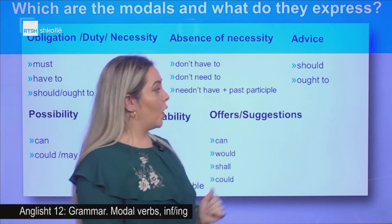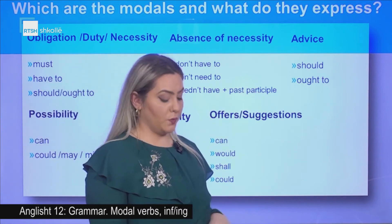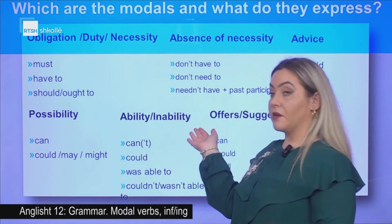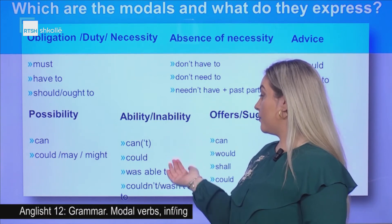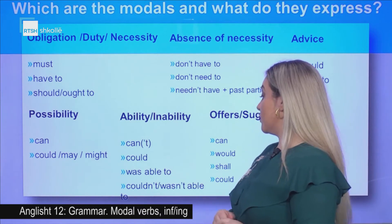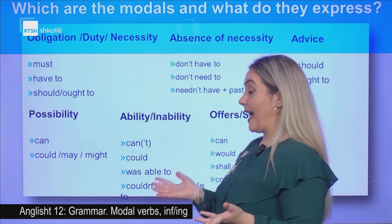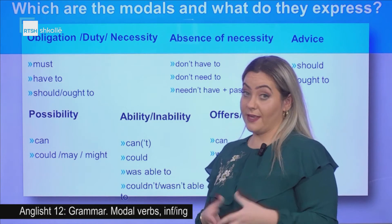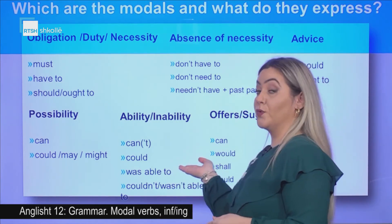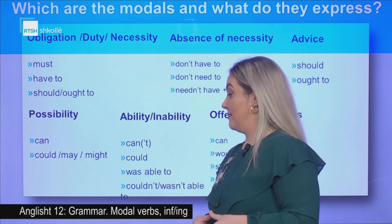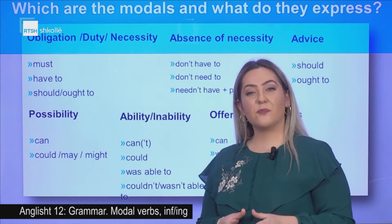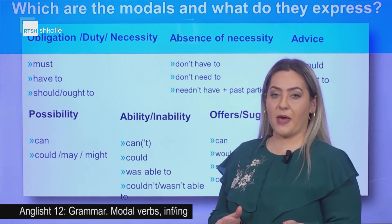Advice: should or ought to. Ability and inability: can or can't, could, was able to, couldn't, wasn't able to. If you use 'can', you use it in the present or maybe in the future. If you use 'could', you use it for the past. 'Was able to' is also used for the past, but for specific situations in the past.